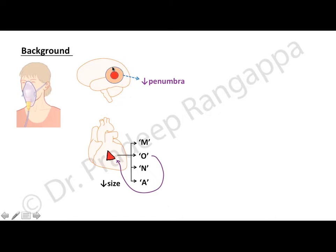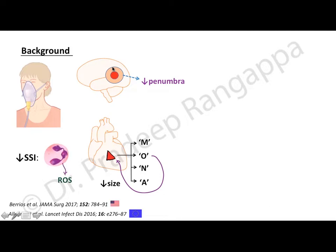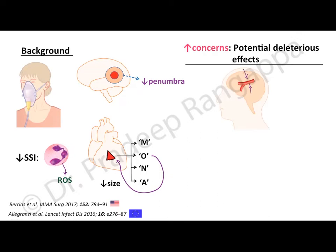Oxygen is thought to facilitate recovery by inhibiting the release of reactive oxygen species from neutrophils or inflammatory cells. However, given this background — considering that oxygen is protective in acute coronary syndrome, strokes, and skin and soft tissue infections — we also need to understand that there are a lot of deleterious effects of oxygen. One potential deleterious effect is cerebral vasoconstriction, which may lead to hypoxemia.